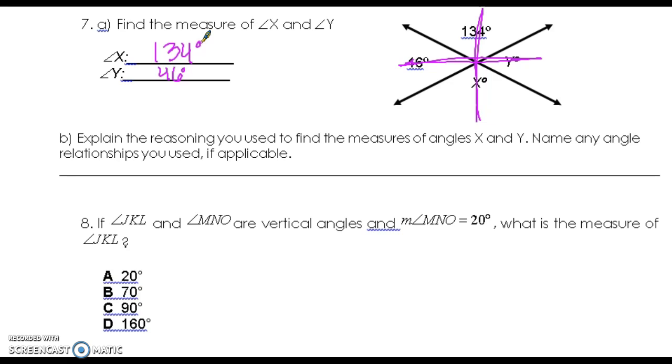If angles JKL and MNO are vertical and MNO is 20, then JKL is also 20.